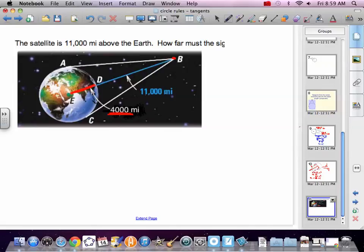We want to know how far does this satellite have to be able to transmit to C and A, which are tangents, points of tangency. And those points of tangencies are the farthest distance this satellite is going to be able to transmit. It's got to transmit at least 11,000 because it's got to transmit at least to the Earth there.